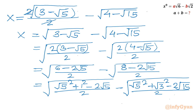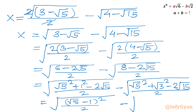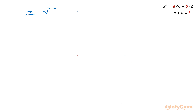The denominator is 2. Now you can see it is the formula a squared plus b squared minus 2ab. So I will write directly: this is the square root of (root 5 minus 1) whole squared over 2, minus square root of (root 5 minus root 3) whole squared divided by 2. So now the whole square and the square root will cancel out with each other. This is x.